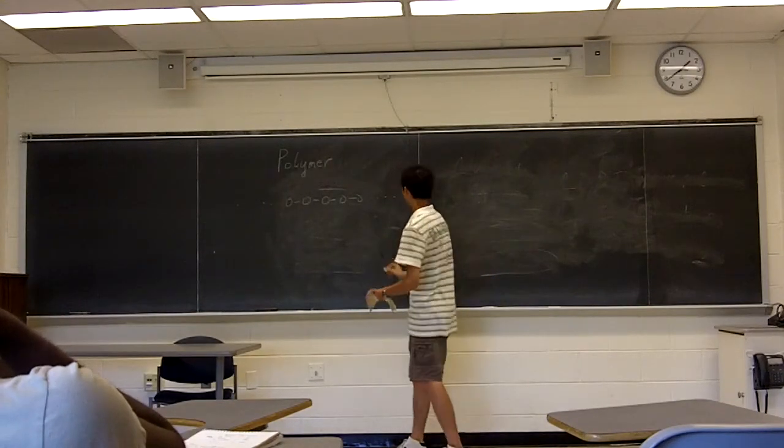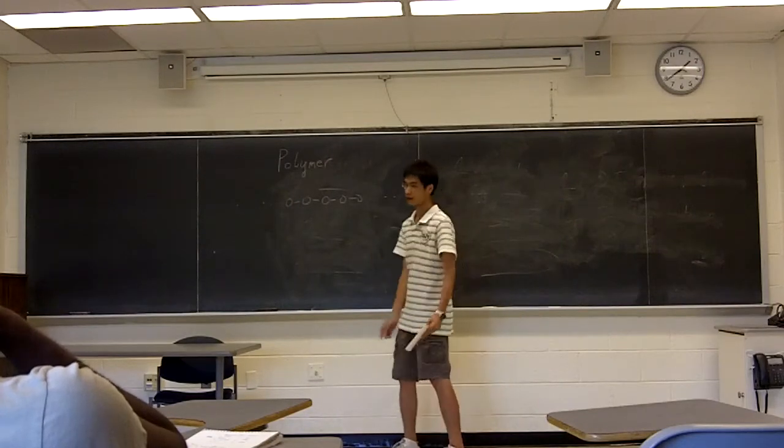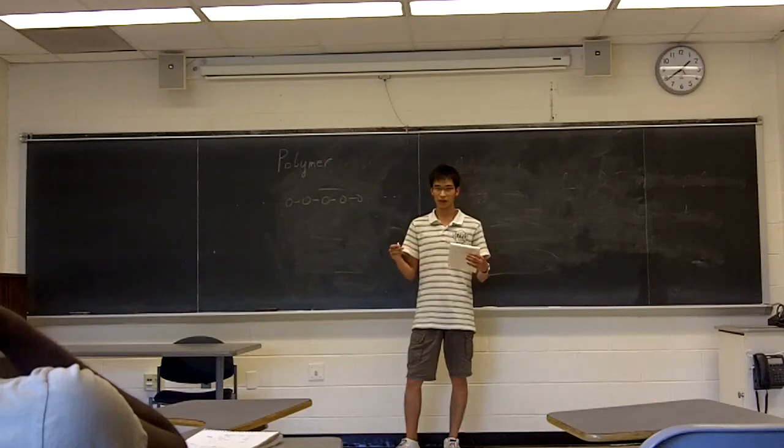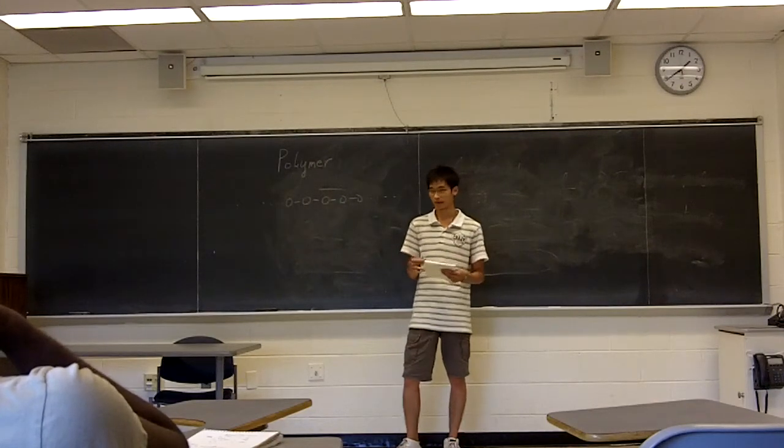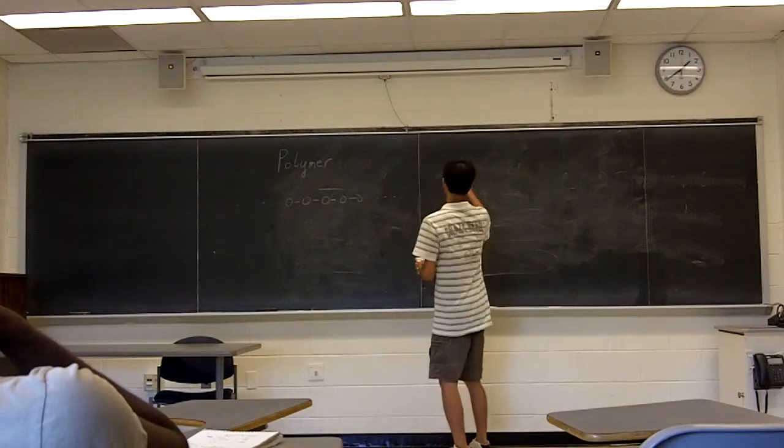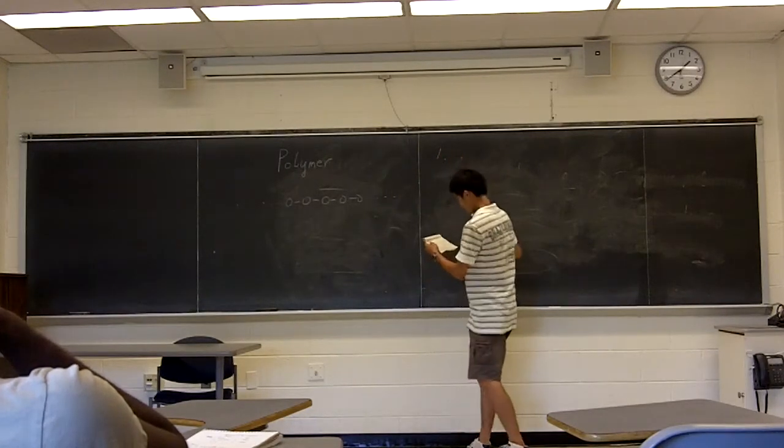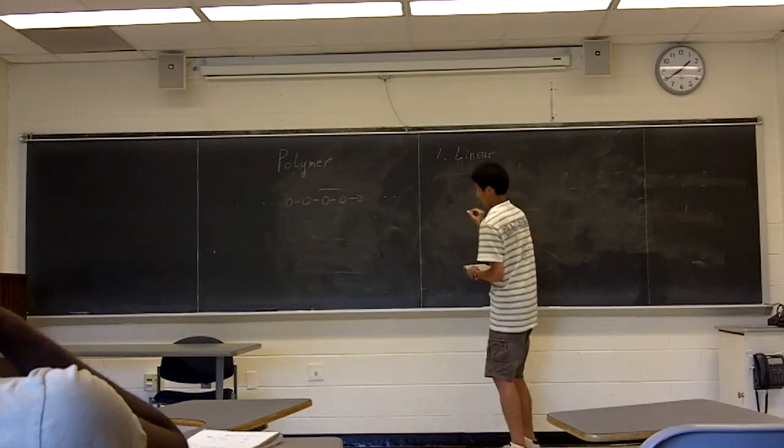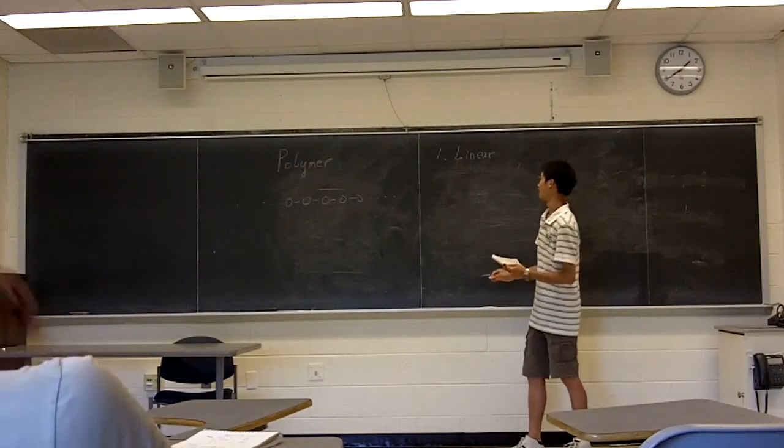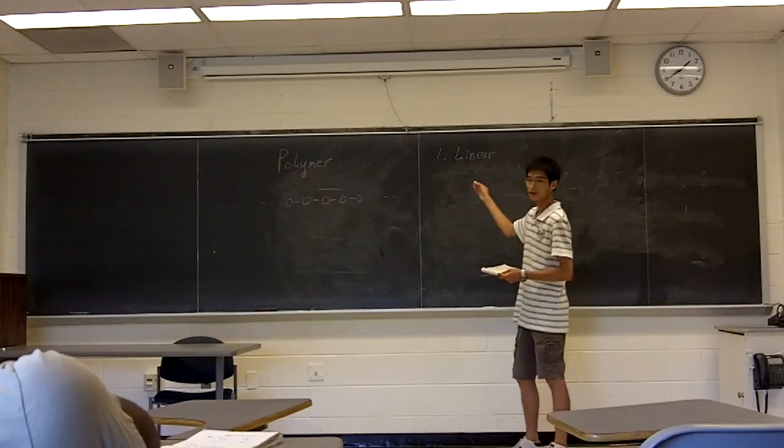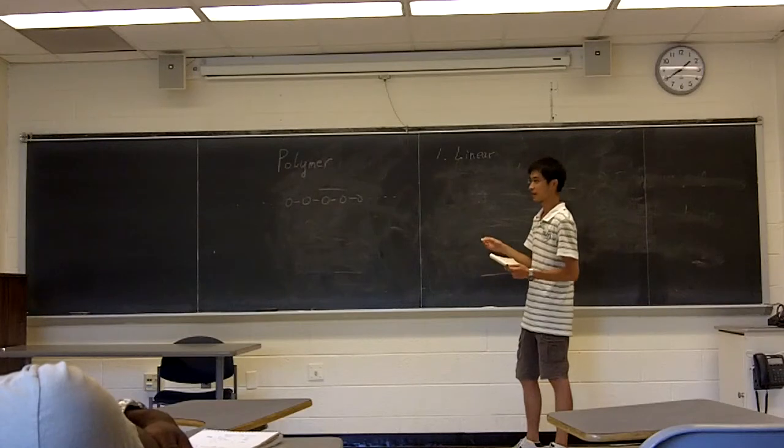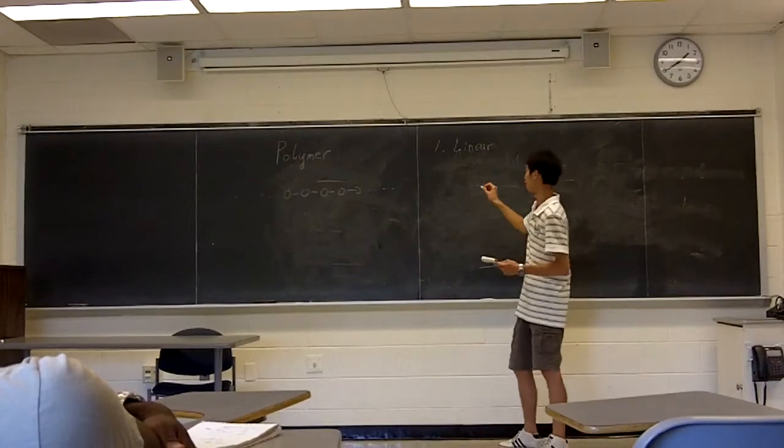So let's see here. Actually, there are three basic structures of polymer, and the first one is linear polymer. And as you can tell from its name, the structure of this kind of polymer is actually linear.